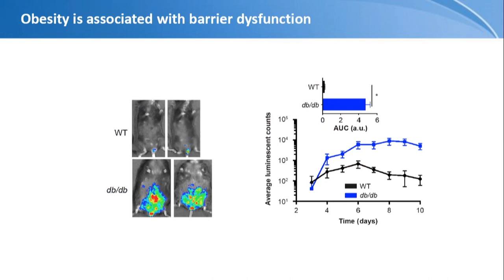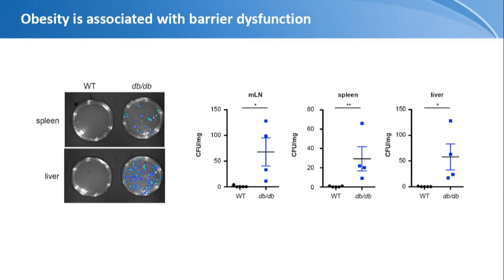This brings me to the main topic: enteric infection. We infected these mice with a bioluminescent version of Citrobacter rodentium, the mouse equivalent of pathogenic E. coli in humans. You can see that the obese mice are massively colonized, and tracking the luminescence over time shows massive outgrowth of bacteria in the morbidly obese host. Just like the microbial molecules we looked at before, these bacteria translocate to systemic tissues — the mesenteric lymph node, spleen, and liver — which never occurs in a wild-type mouse, since this is normally a self-limiting infection that stays in the GI tract unless there is a barrier problem.